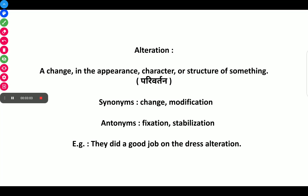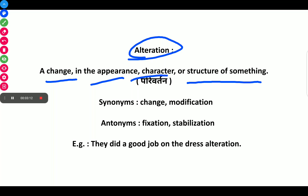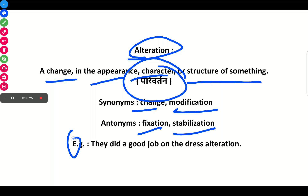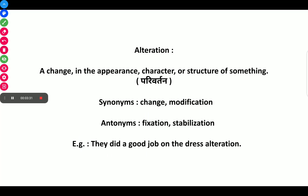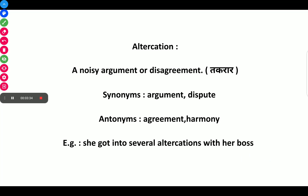The next word is Alteration, meaning a change in the appearance, character, or structure of something. Synonyms are change and modification. Antonyms are succession and stabilization. Example: They did a good job on the dress alteration.